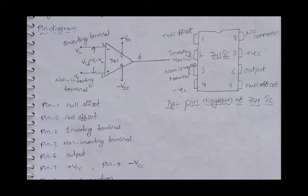The IC 741 has 8 pins. The number of pins 1 and 5 are no connection. From the remaining pins, pin 2 is the inverting terminal, pin 3 is the non-inverting terminal, pin 4 is the negative VCC, and pin 7 is the positive VCC.